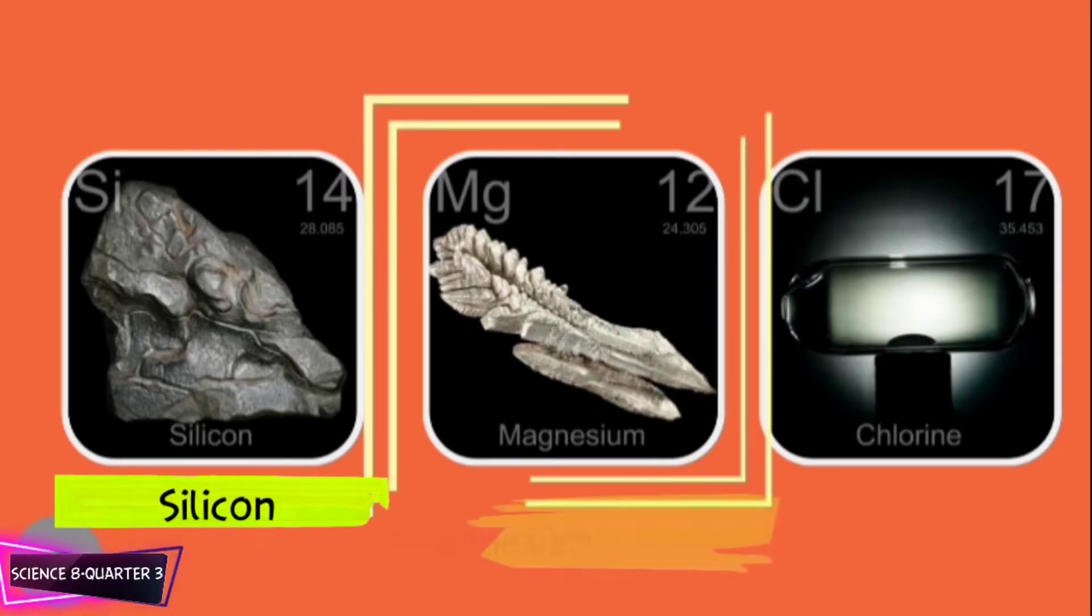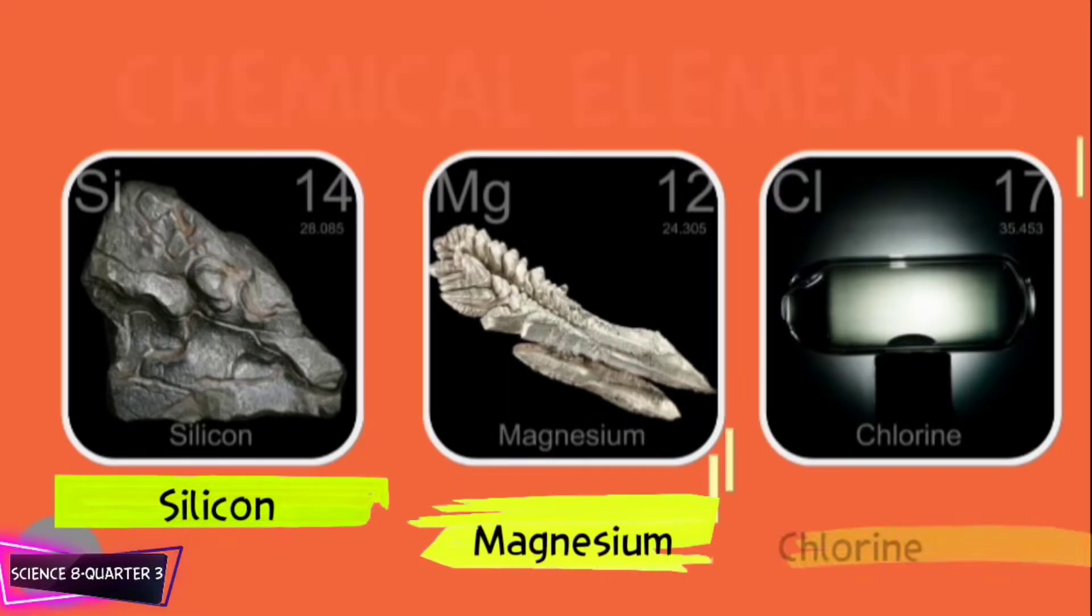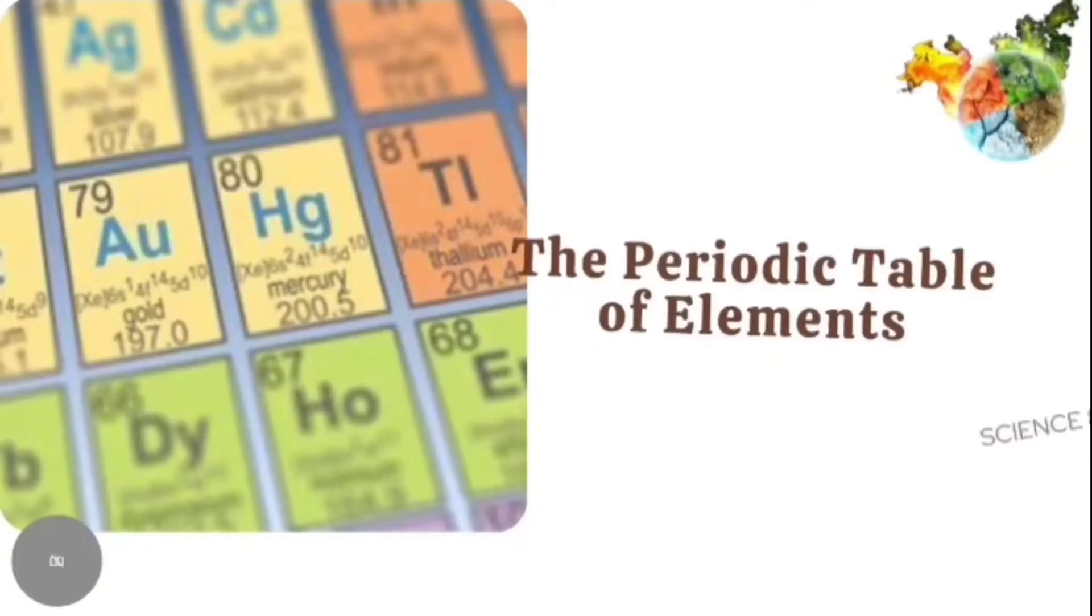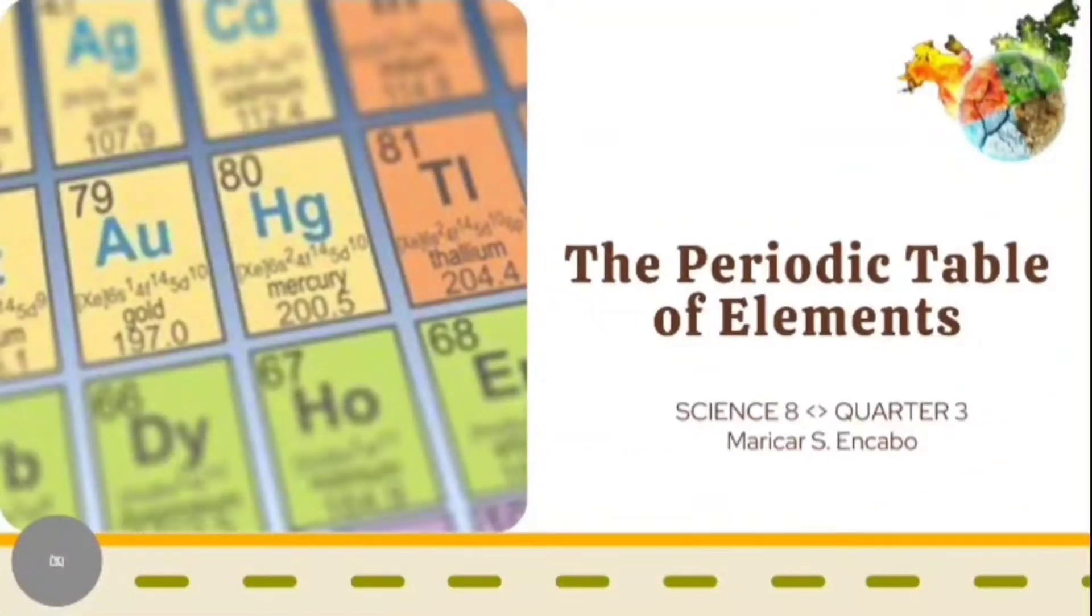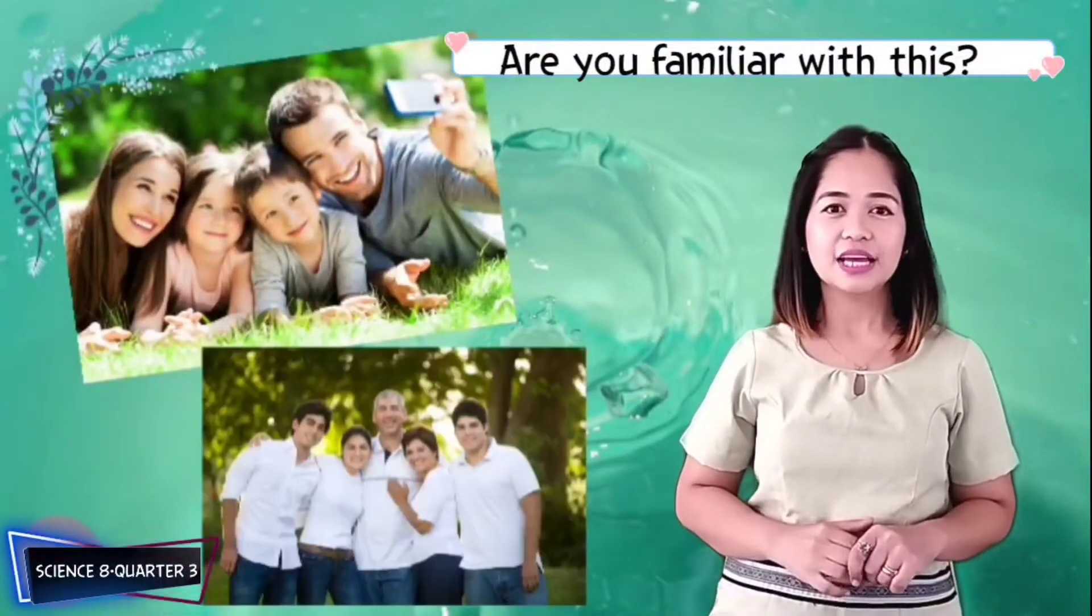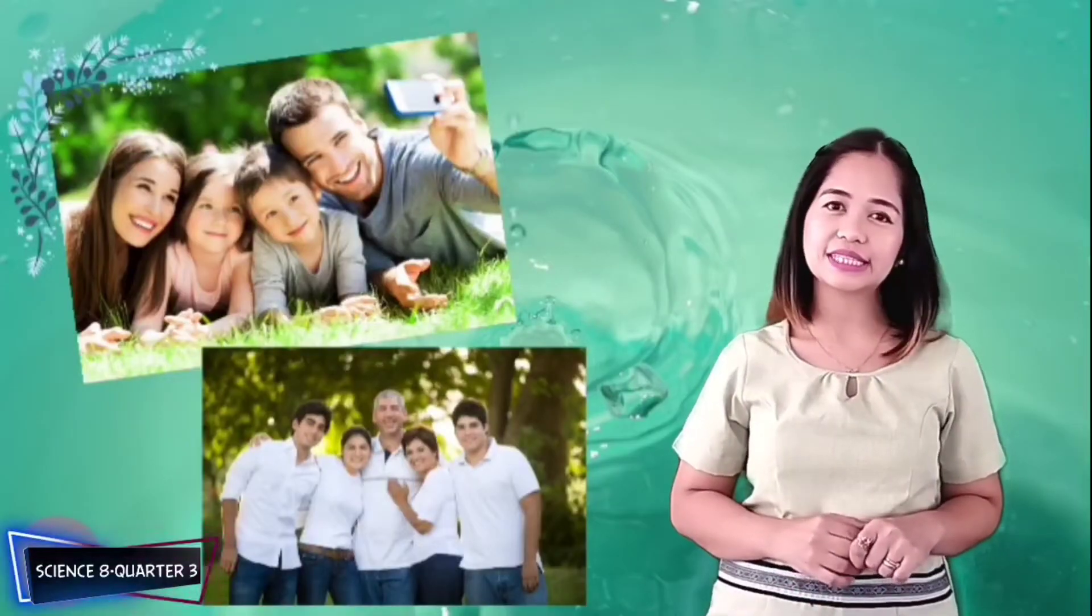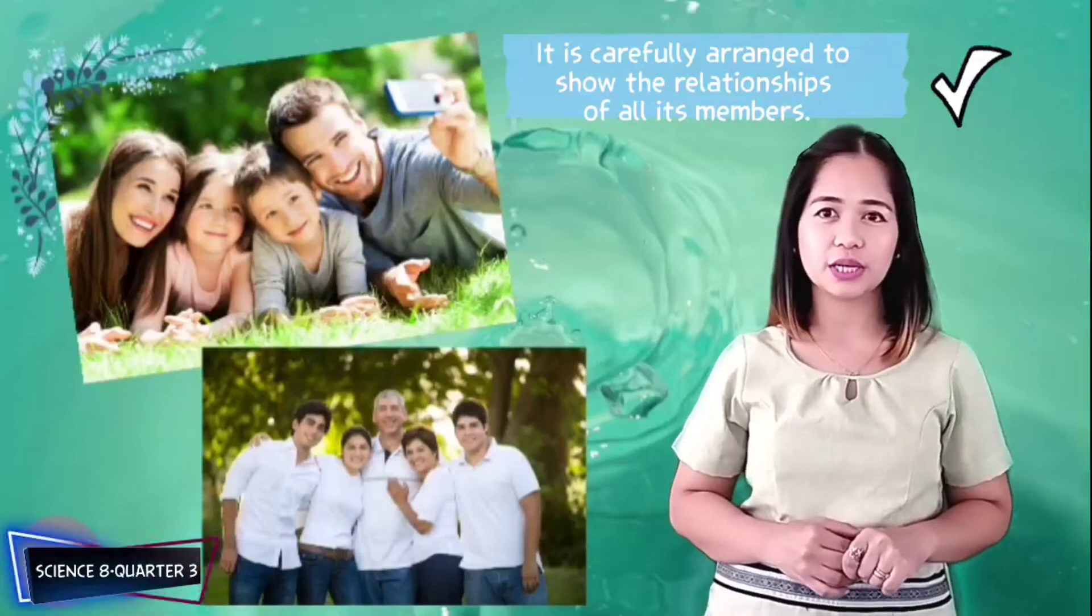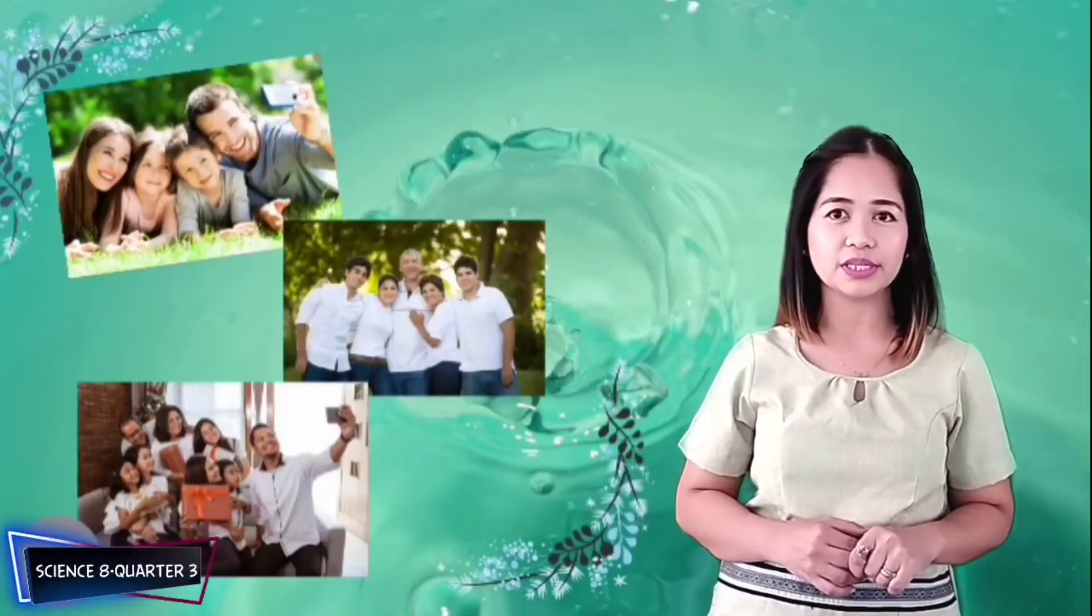Silicon, magnesium, and chlorine are chemical elements that can be found in the periodic table of elements. For this session, we are going to tackle the periodic table of elements. Are you familiar with this? Someone said that for him, the periodic table is like a family photograph.